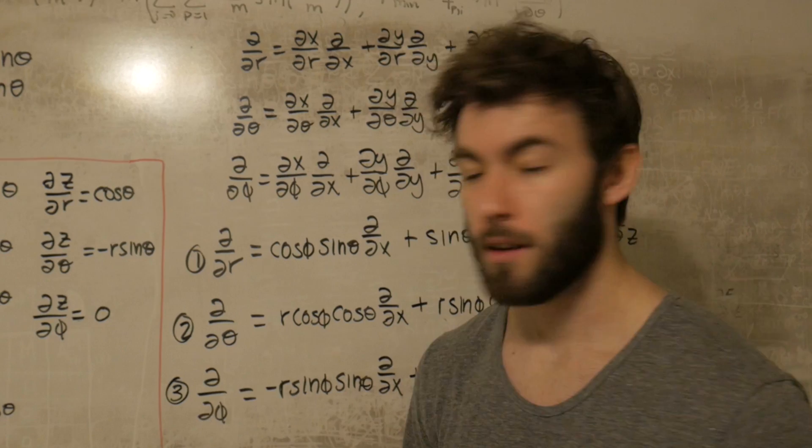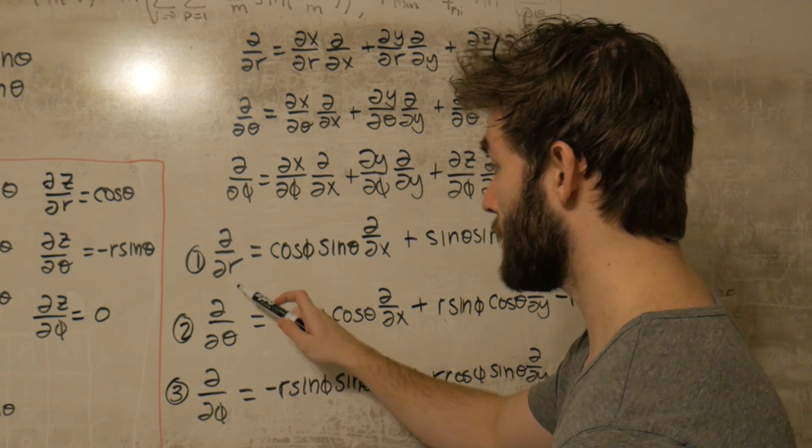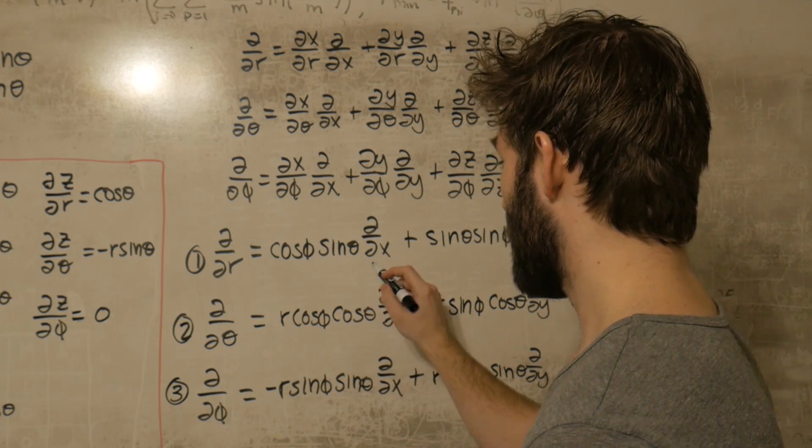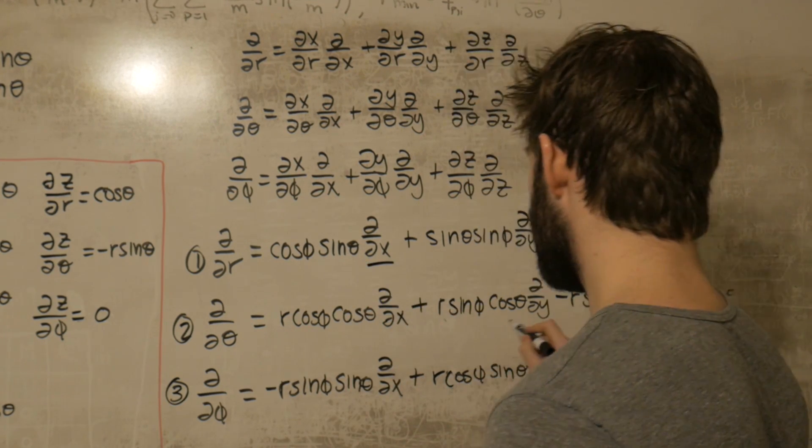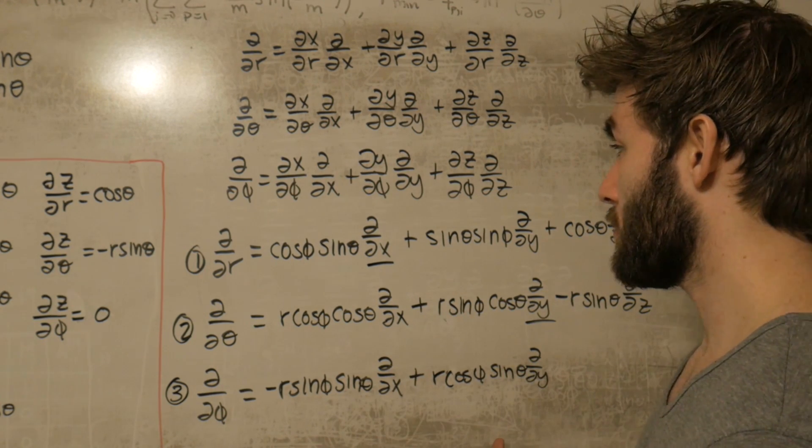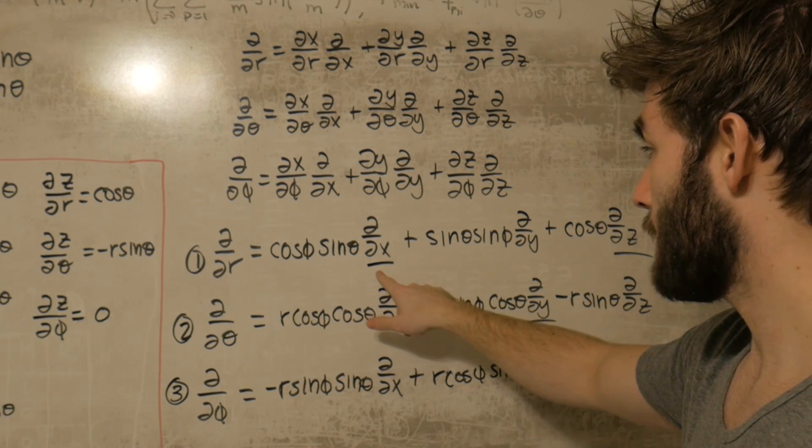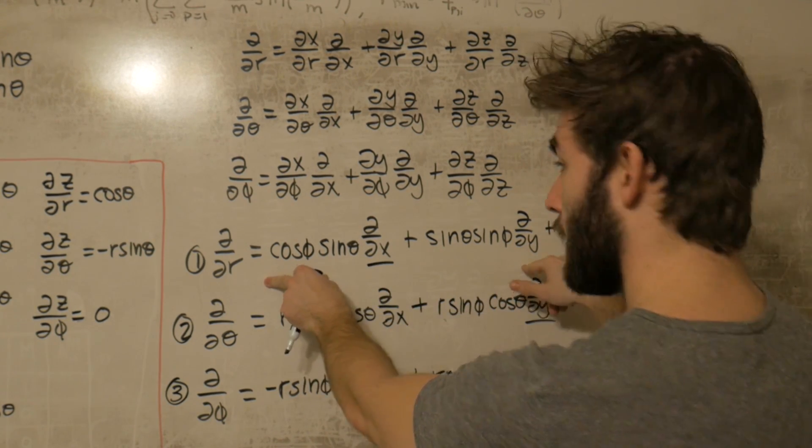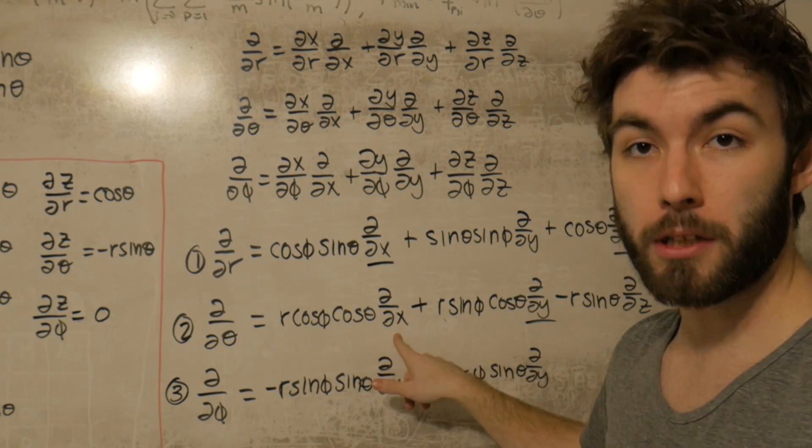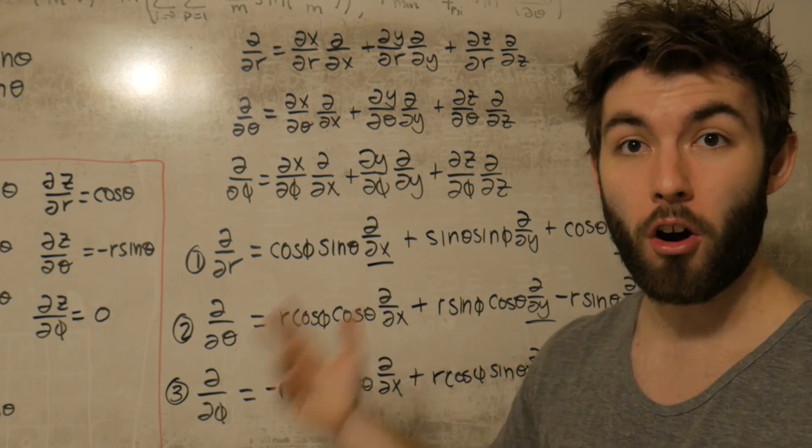Now what we have here is we have three systems of equations where we have explicit definitions for dd/dr, dd/dθ, and dd/dφ. But what we want are explicit definitions of dd/dx, dd/dy, and dd/dz. And the way that we can do that is we could use substitution method where we solve one equation for one of these variables in terms of all of the rest.